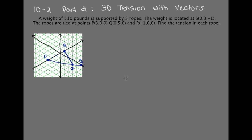Now we're going to look at tension in the 3D world using vectors and how to solve these kinds of tension problems. We have a problem where a weight of 510 pounds is supported by three ropes. The weight is located at point (0, 3, -1) and is supported by ropes tied at (3, 0, 0), (0, 5, 0), and (-1, 0, 0). I've drawn that out with points labeled on our 3D coordinate plane. Our job is to find the tension in each rope.